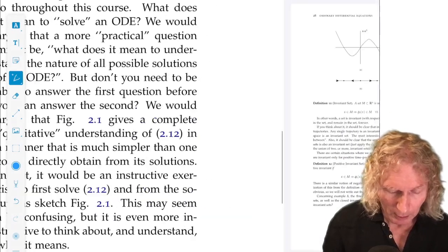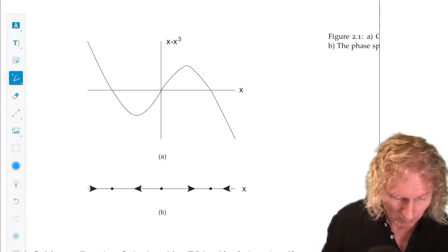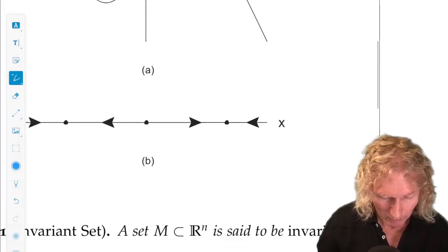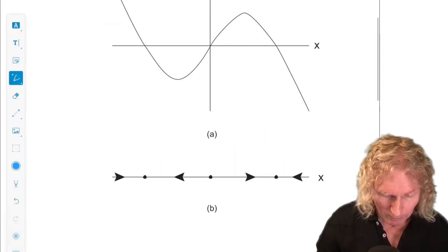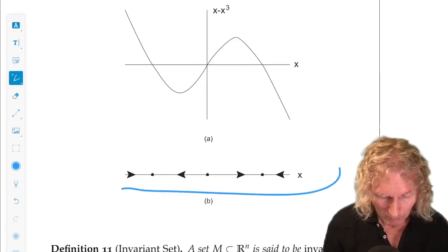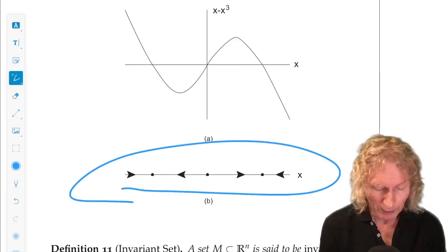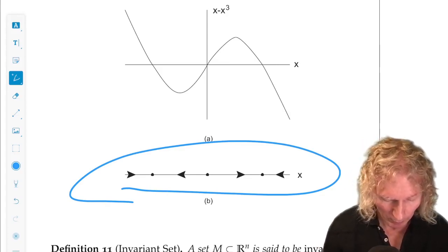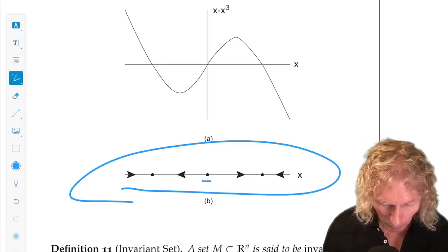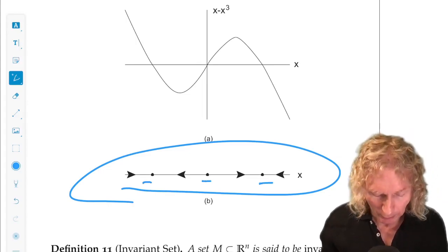So, on the next page, you see phase space and the three equilibrium points. Zero, one, and minus one.